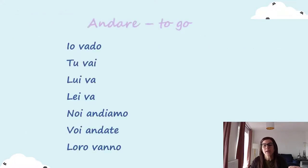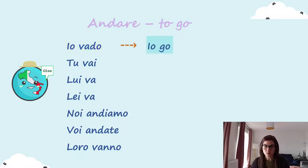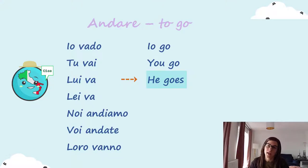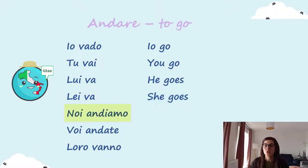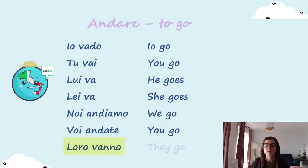Third verb for today: andare. Andare — to go. This is really a basic verb. Io vado — I go. Tu vai — you go. Lui va — he goes. Lei va — she goes. Noi andiamo — we go. Voi andate — you go. Loro vanno — they go.